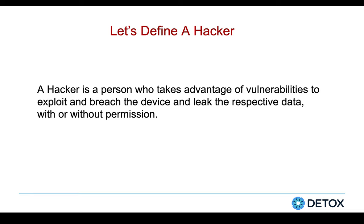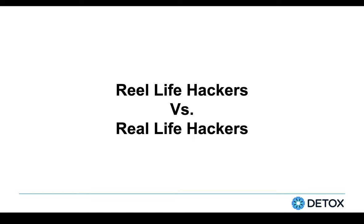So I hope till here we are pretty clear about a hacker, about information, about data, and about different types of information. Now everyone might have seen a hacker in a movie, but very few might have seen one in real life. There is a paradox — a trade-off — named as real life hackers versus hackers in movies. In movies, we see a hacker who types quite fast in a very dark room with a black screen and green font, typing something for a few seconds and getting prompted with 'access granted.'